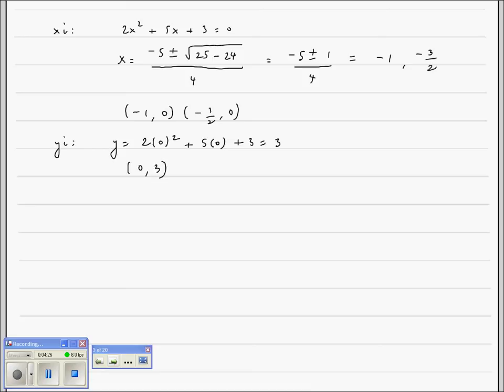Now, if I was to graph this, my vertex was at negative 5 fourths. So there's negative 1. There's negative 2. Put negative 5 fourths right there. Negative 1 eighth. There's negative 1. So we'll put negative 1 eighth about right there. So the vertex would be there. There would be your vertex.